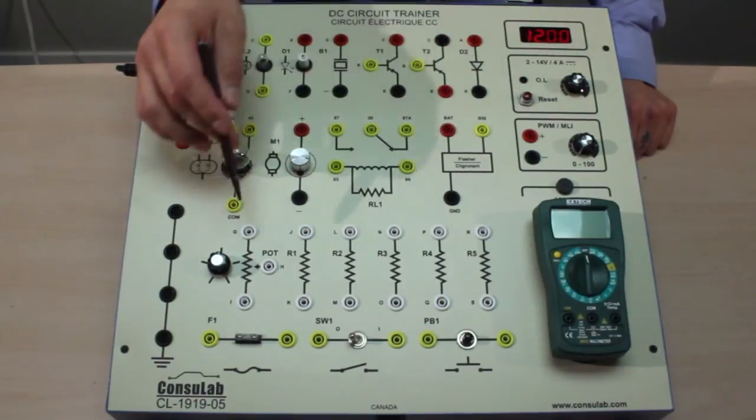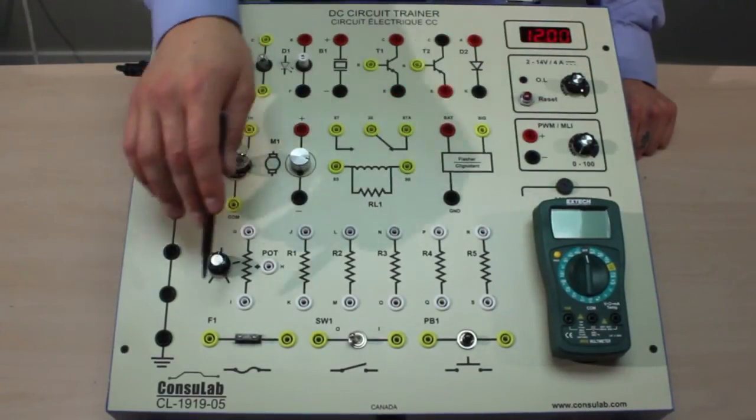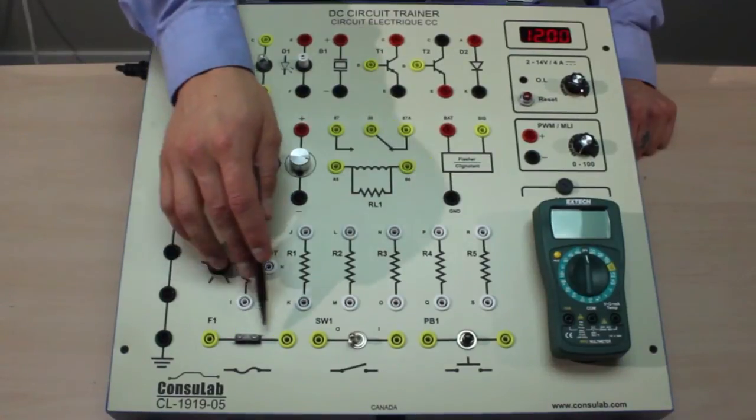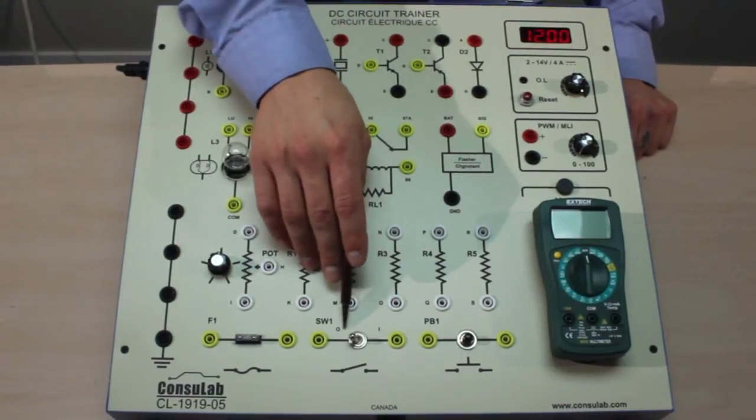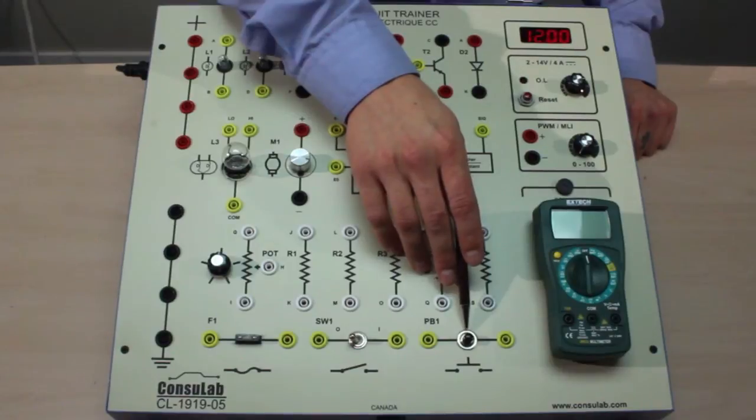A flasher, potentiometer, and five resistors. Across the bottom we have a blade style fuse, dual position switch, and a push button switch.